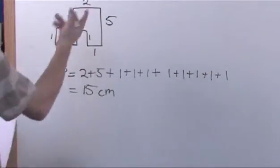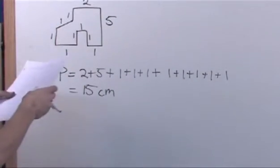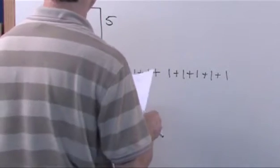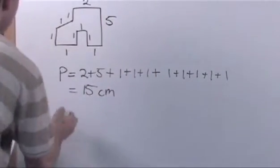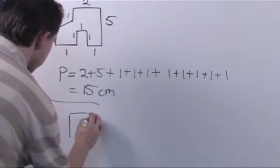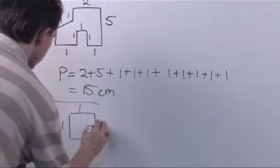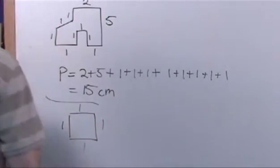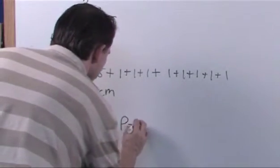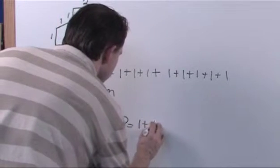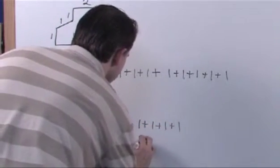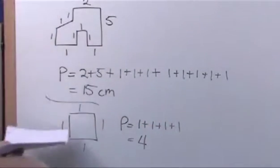You just add up the sides — that's called the perimeter. And then if you had something like a square with sides 1, 1, 1, 1, then the perimeter is just 1 plus 1 plus 1 plus 1, which is just 4, for the square.